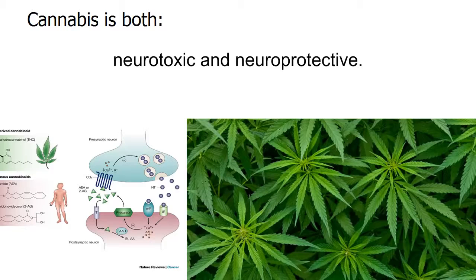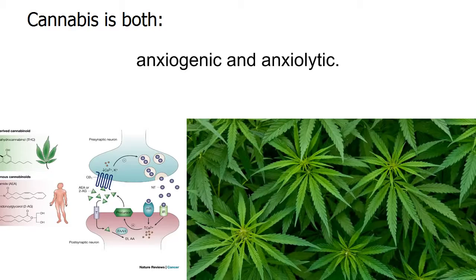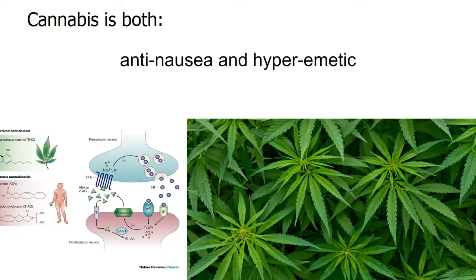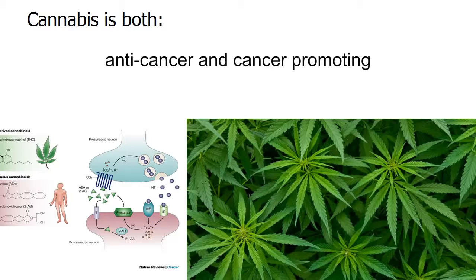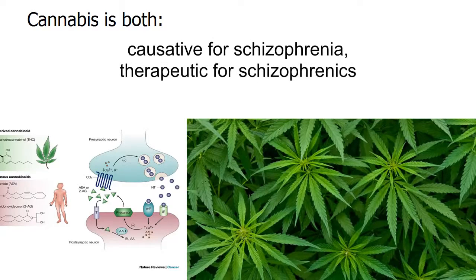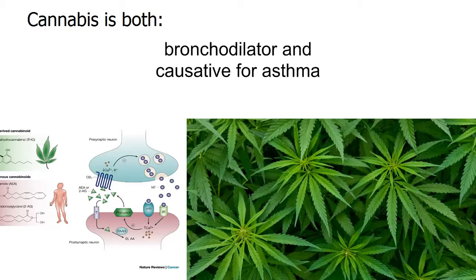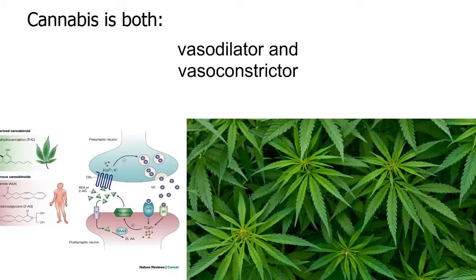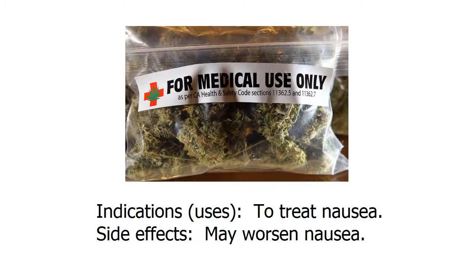Cannabis, for example, in nerve cells is both neurotoxic and neuroprotective. It increases anxiety, and also lowers it. It reduces vomiting and nausea, or it can drive it to a new high called hyperemesis. It can kill cancer cells, or trigger them to become more resistant. It causes changes in the brain that mirror schizophrenia, yet in patients with schizophrenia it can help to manage their symptoms. It's a bronchodilator, and also can trigger asthma. It relaxes blood vessels, and also makes them constrict. This is not a good profile for a therapeutic drug, and I would argue not a good profile for a recreational drug either. It's a bit of a nightmare for a researcher trying to make sense of things.